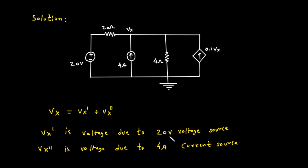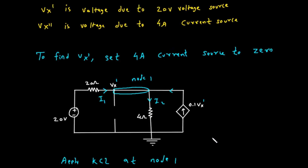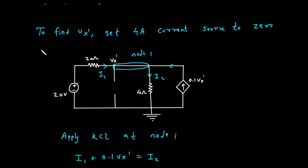Here, Vx prime is the voltage at that node due to only the 20 volt source. To find Vx prime, we need to consider the 20 volt source and set the 4 amp current source to 0. Setting an ideal current source to 0 is equivalent to replacing it with an open circuit.